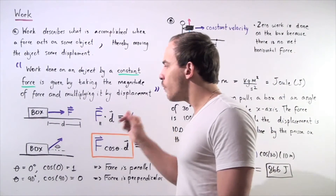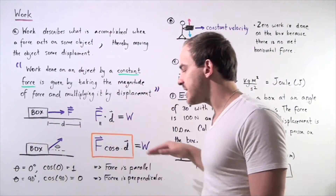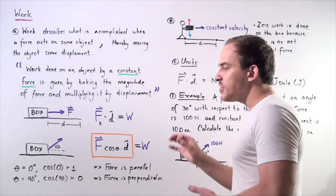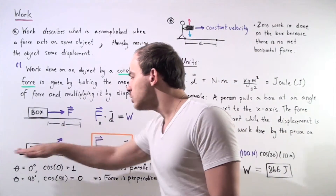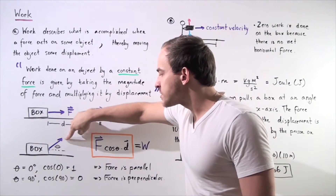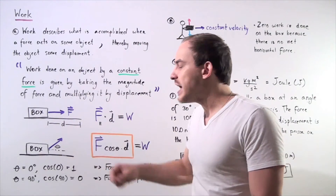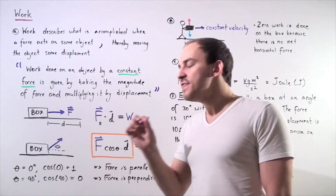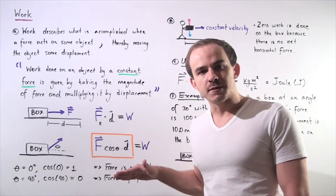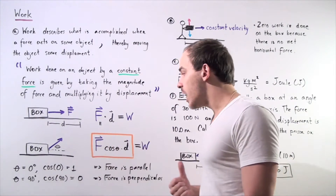What happens if the force acting on our box is at an angle theta with respect to the displacement? We still need to calculate the force acting along the x-axis. We calculate the x-component of the force by taking the magnitude F and multiplying by cosine of angle theta. This gives us the x-component of the force acting in the same direction as displacement, and we multiply by displacement to get the work done.